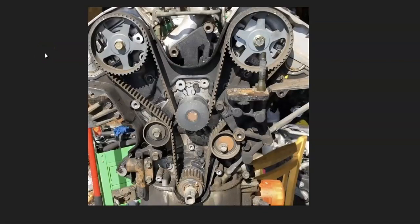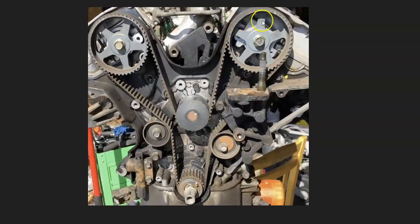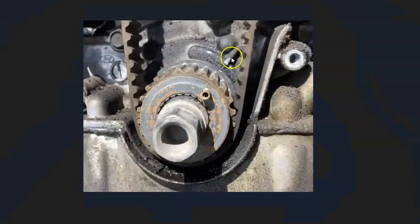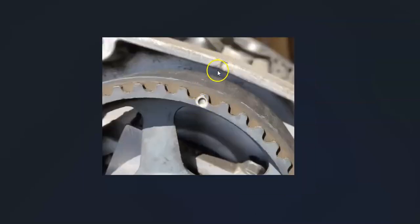If the timing belt or chain has slipped a notch, it can throw everything off. The basics of checking this: there are notches you can line up to verify everything is working correctly. For example, there's a notch up here, one on this side, and one down here on the crank. You need to find all these notches, rotate the engine until they match up, and each one of these notches should be aligned.